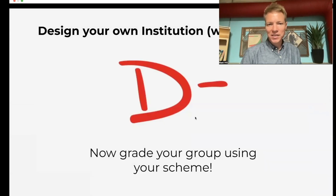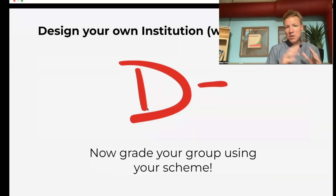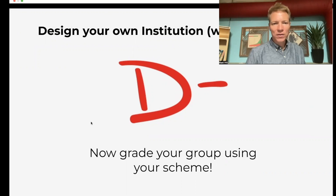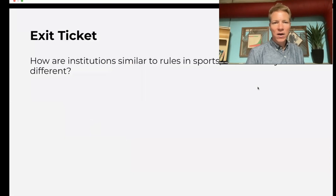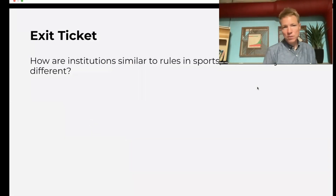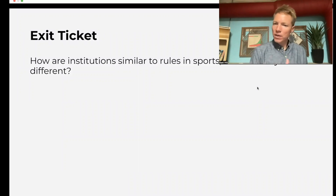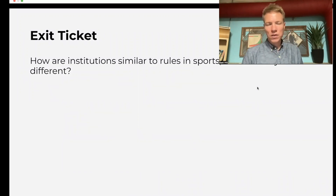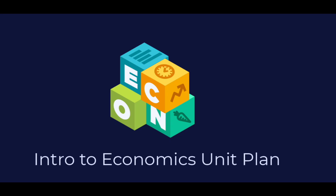Then, as a surprise, ask your students to actually grade their group using that scheme — not for real, but just to go through the exercise and see how well their institution performed. Ask them: how are our institutions similar to rules in sports, and how are they different? Just a little compare and contrast, analogizing to sports rules. That is day four — institutions. We'll go to our final day, markets, next. If you don't already have the unit plan, there's a link on screen, or check out the next walkthrough video.